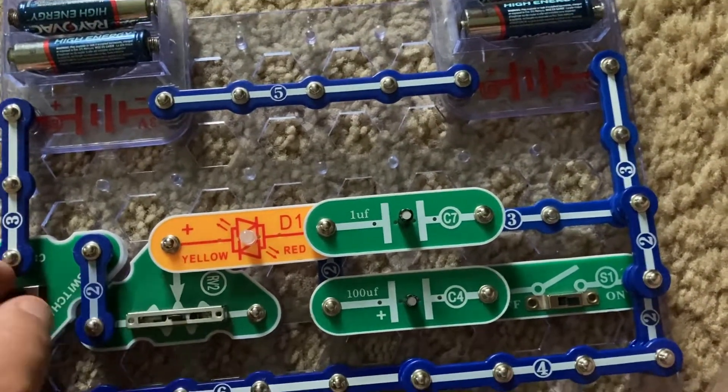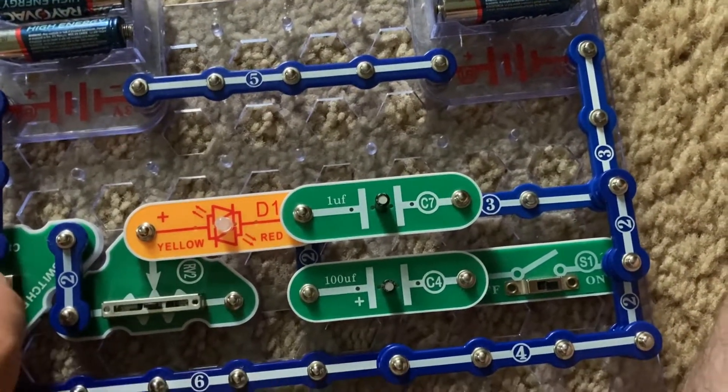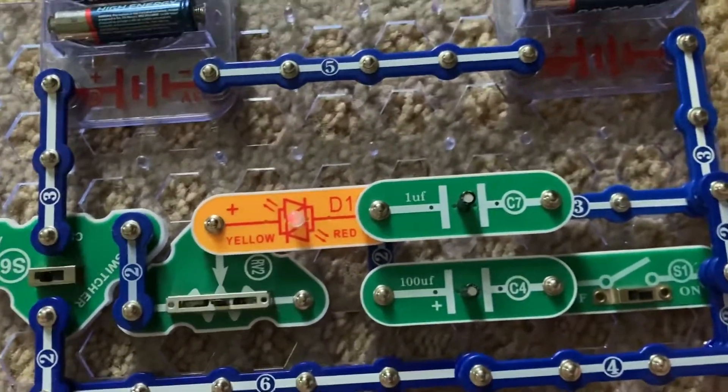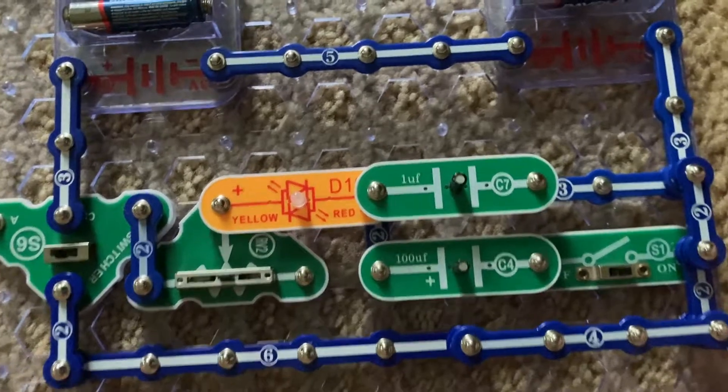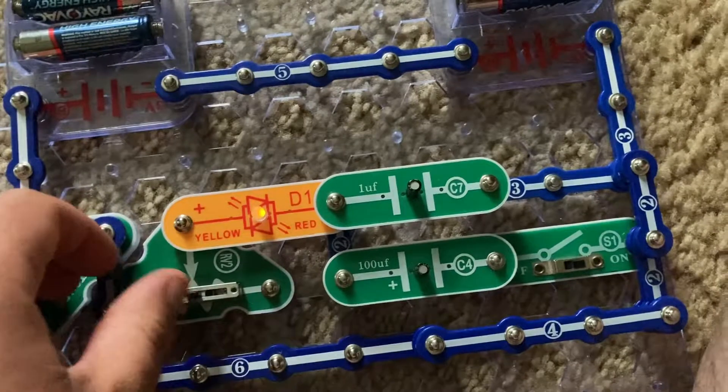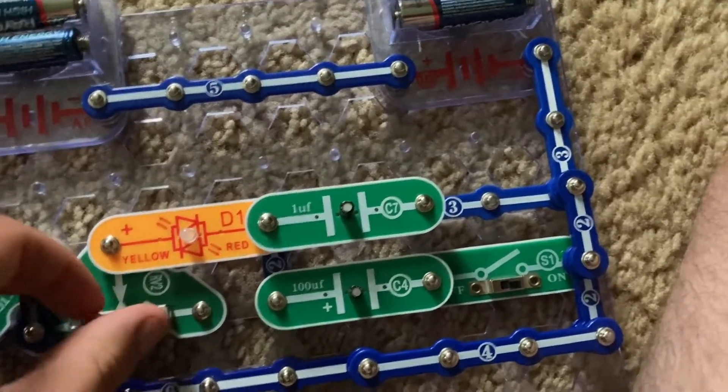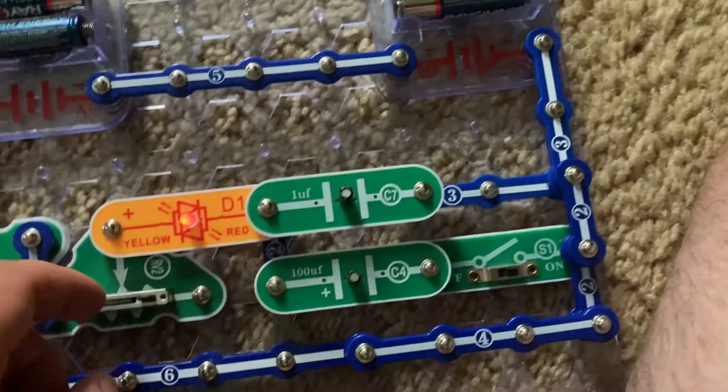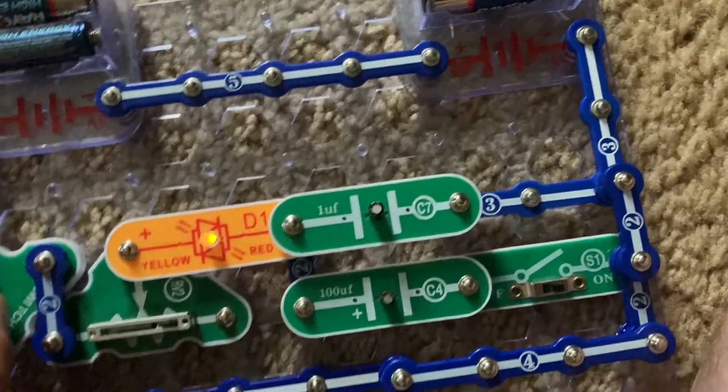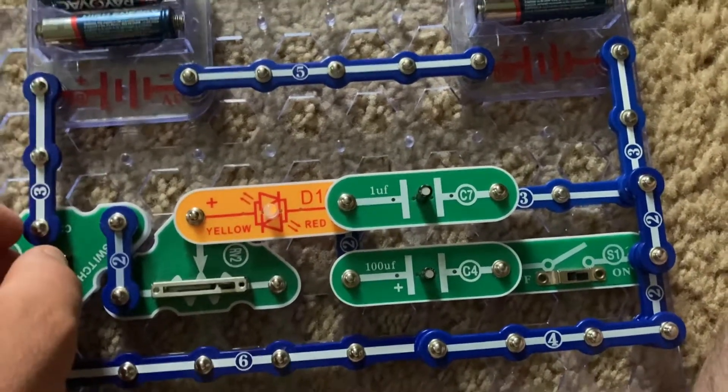However, when I move it, let's say halfway, now the LED will stay on even longer because it slows the rate at which current flows out of the C4 capacitor and through the LED. Now when I set RV2 to the rightmost setting, the bicolor LED stays on the longest.